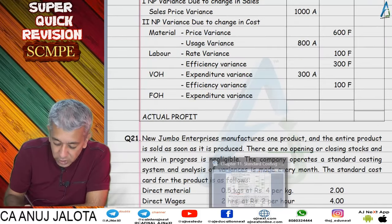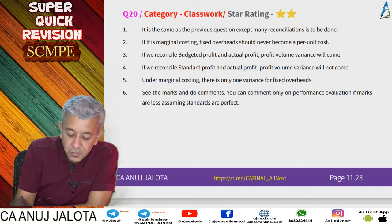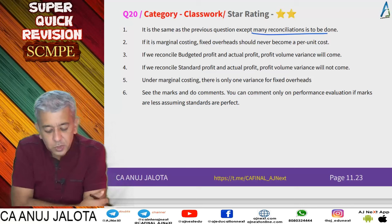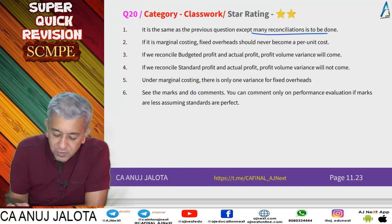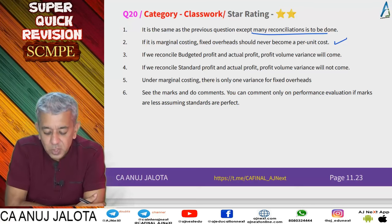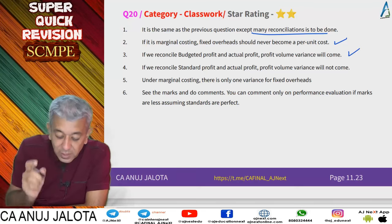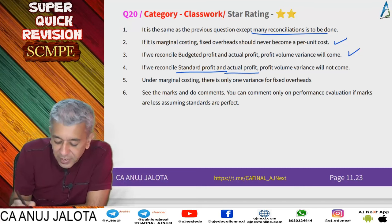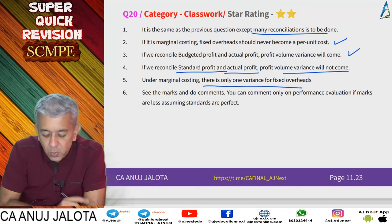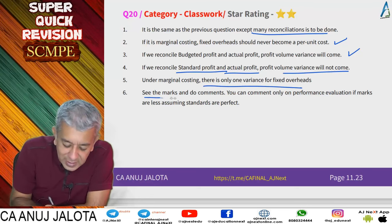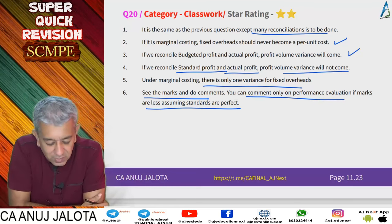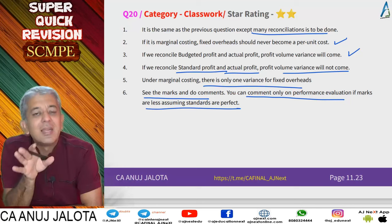Question 20 is the same as question 19 except many reconciliations are to be done. If it is marginal costing, fixed overheads should not become a per unit cost. If reconciling budget and actual profit, profit volume variance comes. If reconciling standard and actual profit, profit volume variance does not come. Under marginal costing, there is only one variance for fixed overheads. For comments, see the marks: you can only comment on performance evaluation if marks are sufficient, assuming standards are perfect. Later questions explore situations where standards might not be perfect.